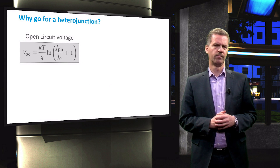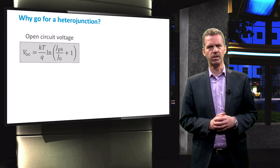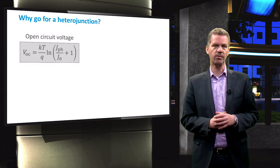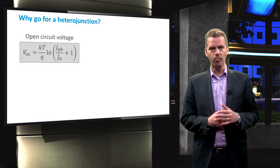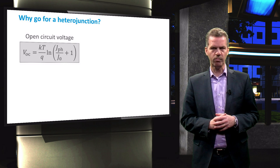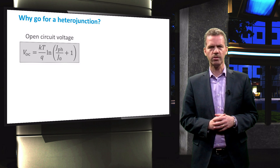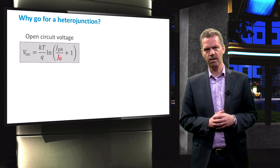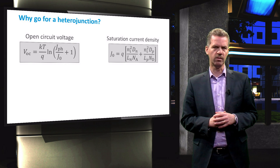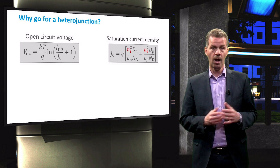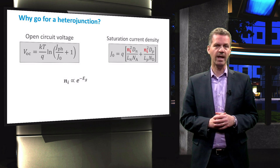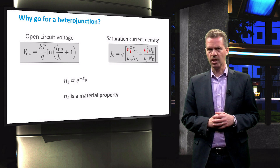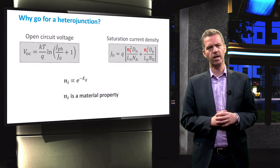So why do we want a heterojunction? As discussed in previous videos, a solar cell can be described by the Shockley-Diode equation. One of the parameters we obtain for our P-n junction under illumination is the open-circuit voltage. Looking at the equation for the open-circuit voltage, we see that the only term not a constant or related to the photocurrent is J0, the saturation current density. J0 depends on the intrinsic carrier concentration of the material, which is related to the band gap and is thus a material property.